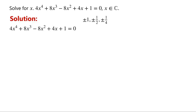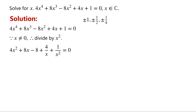We will use the substitution method to solve this quartic equation. As x does not equal zero, we divide the equation by x squared. Then the equation becomes: 4x squared plus 8x minus 8 plus 4 over x plus 1 over x squared equals zero. Rearranging, we have 4x squared plus 1 over x squared, plus 4 times (2x plus 1 over x), minus 8, equals zero. We label this as equation 1.